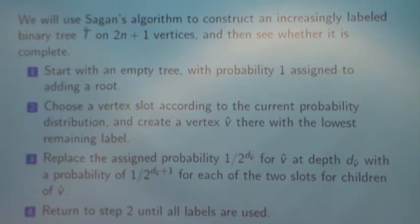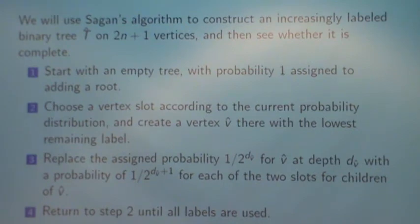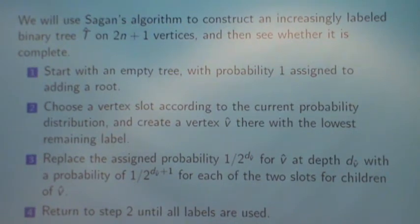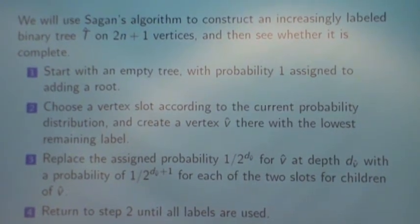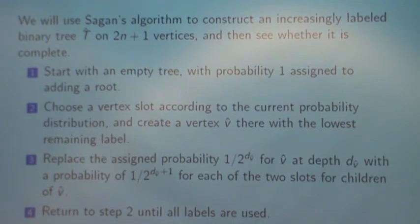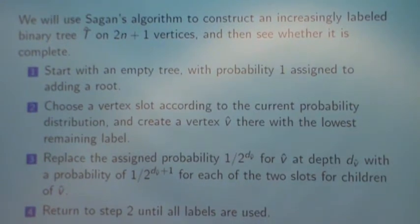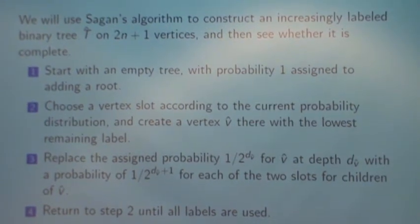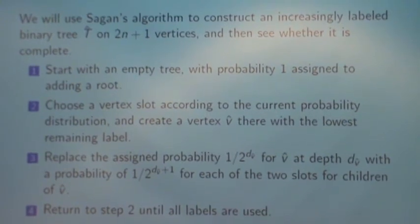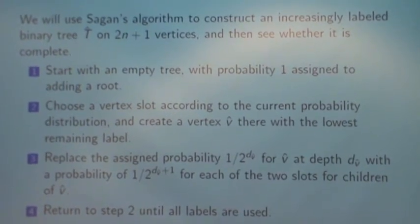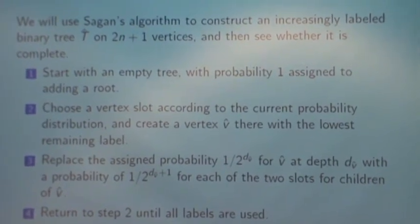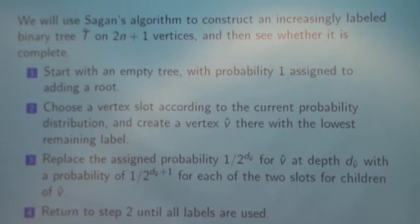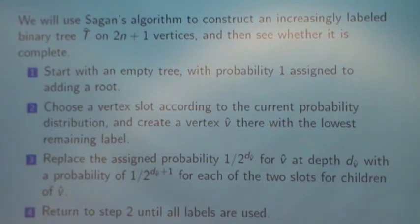Assign the lowest label according to the current distribution and put a vertex there. Now once we've placed a vertex, that had probability 1 over 2 to the dv-hat, for putting the label vertex v-hat at depth dv-hat, and split that equally among the two children, each with a probability 1 over 2 to the dv-hat plus 1 for the two slots. Repeat this until we run out of labels.